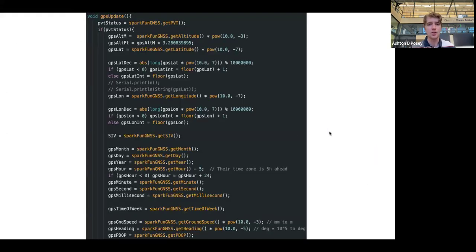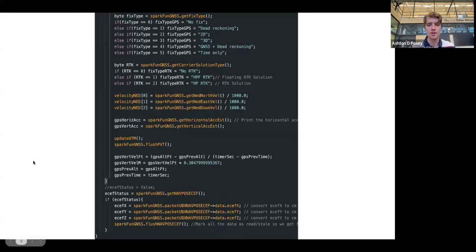we just have the code showing the current update for the GPS and the important function, which is this GPS horizontal and vertical accuracy.